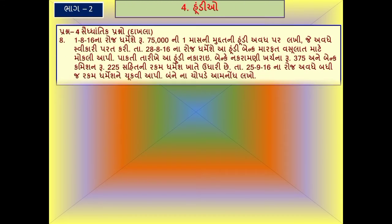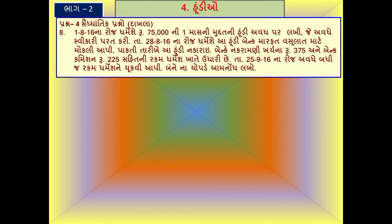નમસ્કાર, સ્વાગત છે. ધોરણ અગિયાર કોમર્સ, નામાના મૂળતત્વ ભાગ બે, પ્રકરણ ચાર - હૂંડીના વ્યવહાર. આજે આપણે સ્વાધ્યાયના પ્રશ્ન નંબર ચારના સૈદ્ધાંતિક પ્રશ્નો, એટલે કે દાખલાઓ, જેનો પેટા પ્રશ્ન નંબર આઠ - એક આઠ સોળના રોજ ધરમેશે રૂ. ૭૫,૦૦૦ ની એક માસની મુદ્દતની હૂંડી અવધ પર લખી.